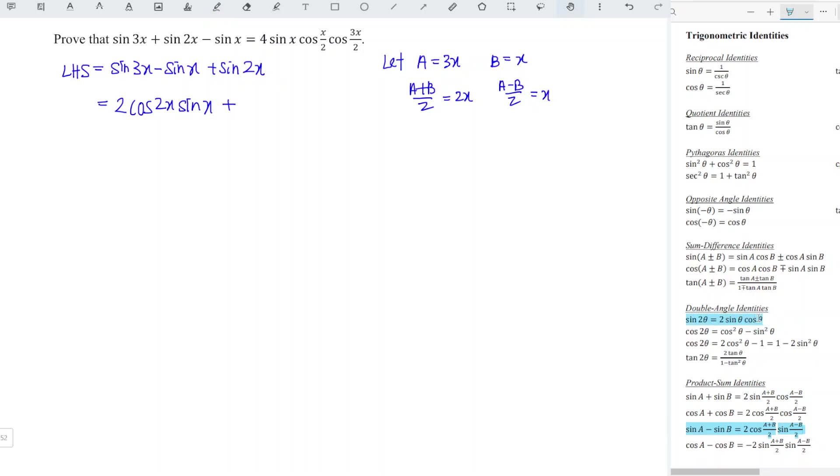Which means that we should have 2 sin x cos x. Let's factorize the common term so we have 2 sin x times cos 2x plus cos x.